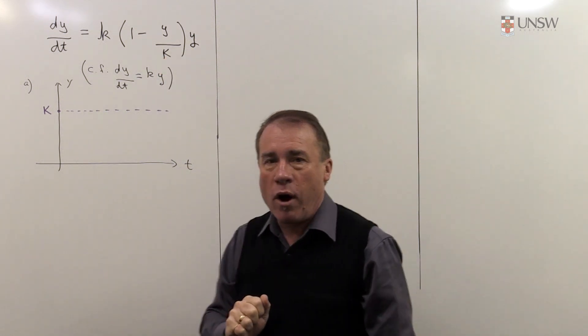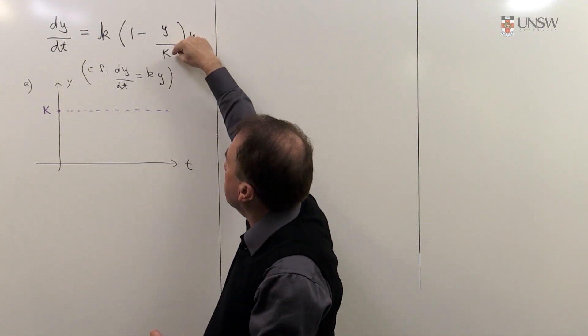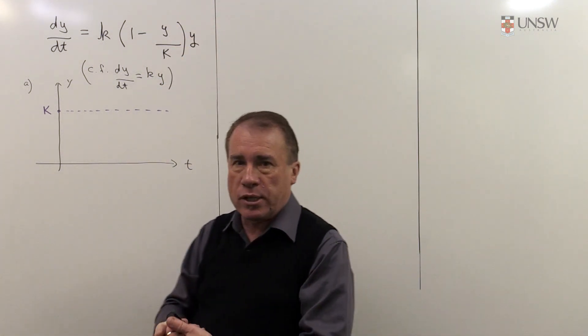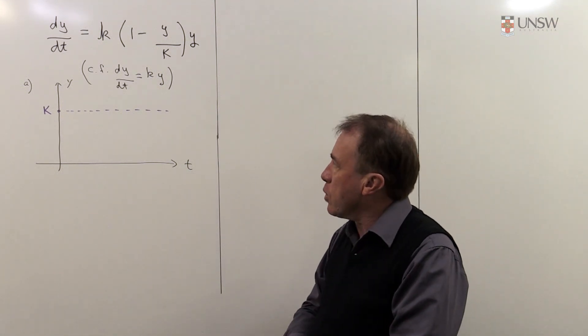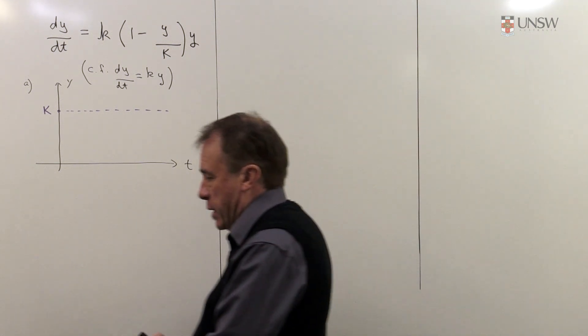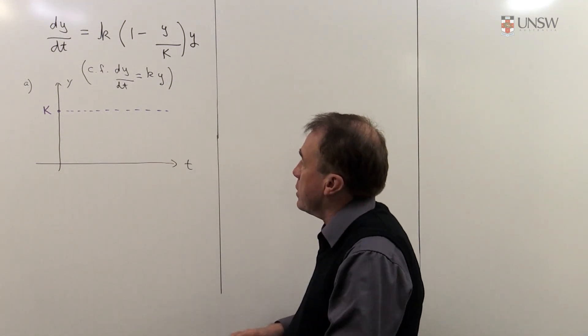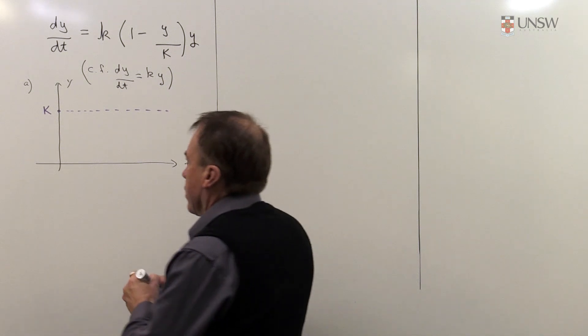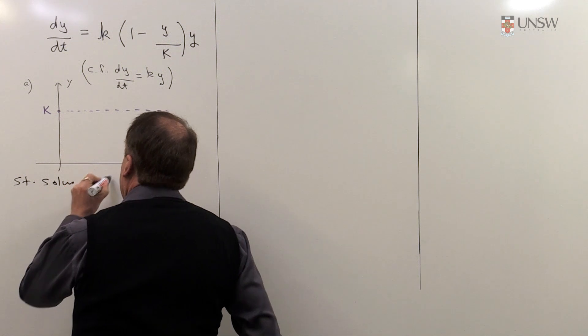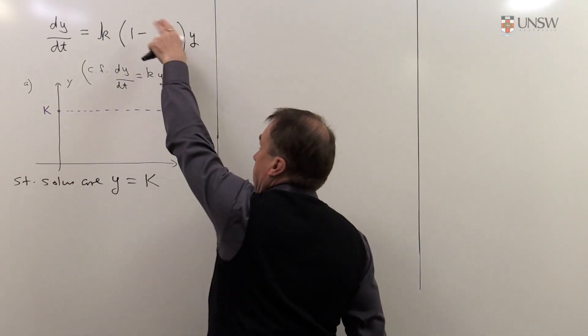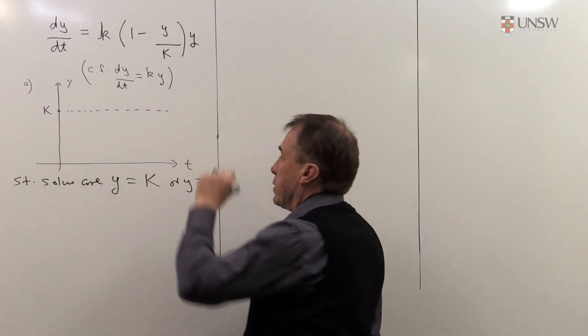So, in this model, we have a y on the end as well, that has the property then that it is bounded by some maximum K, but also if the population is zero, well, then nothing happens. So those two values, part A of the question asks you to write down the so-called steady state solutions or stationary solutions to this, and really that's just what I've been talking about. So for part A, the stationary solutions are when y equals capital K because then the derivative is zero, or y equals zero, and then the derivative is zero.